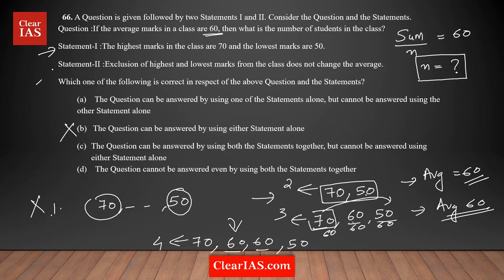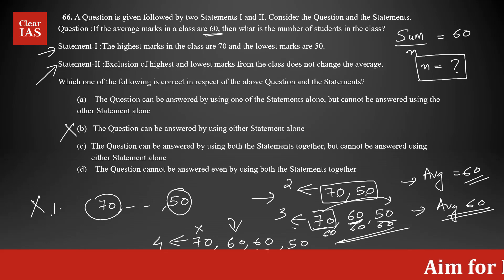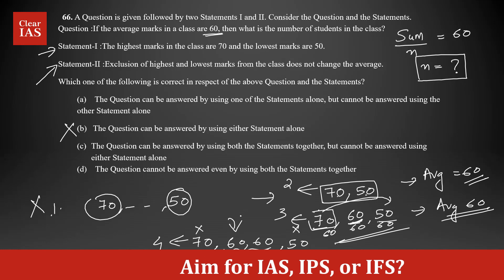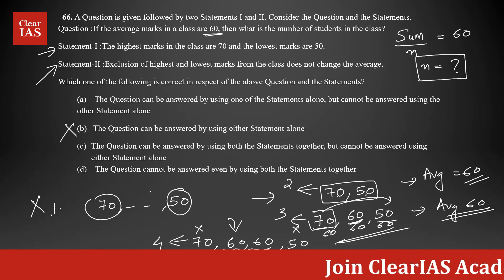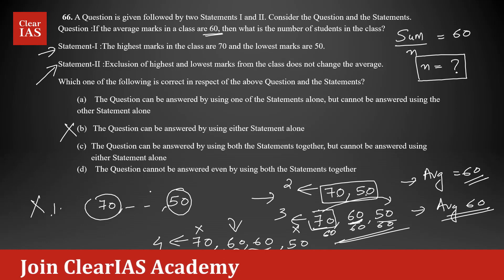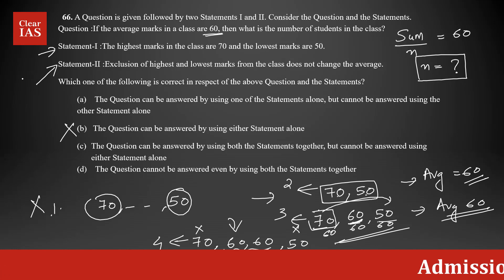Now using Statement 2 alone. Statement 2 says that exclusion of the highest and lowest marks from the students does not change the average. But you're not getting enough information. Even if you remove the highest and lowest, the average stays at 60 — but that is still not sufficient to find out how many students are there in the class. Are you getting enough data from Statement 2 to answer the question? No. So Statement 2 alone is not sufficient, and option A is also not the answer.